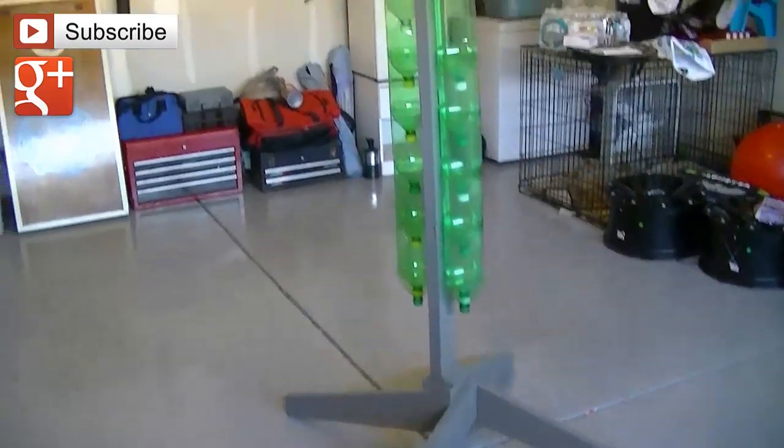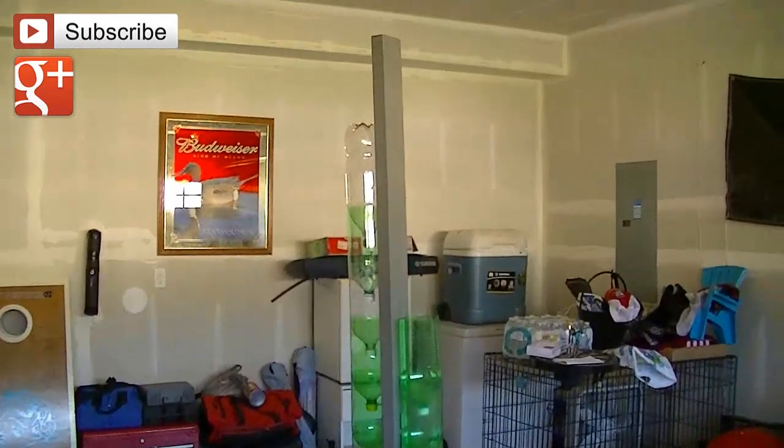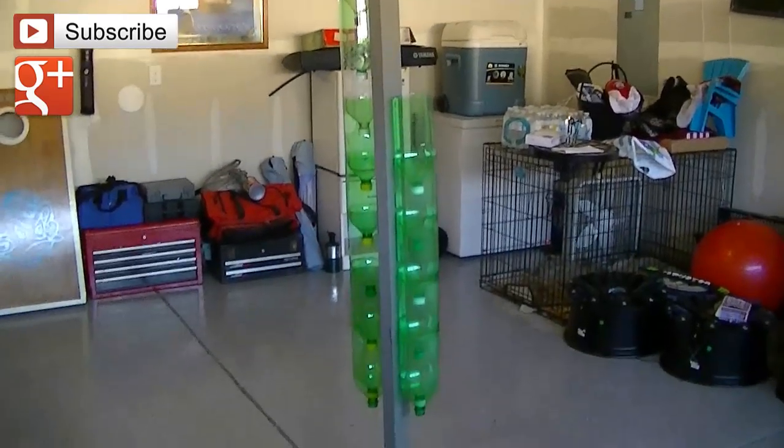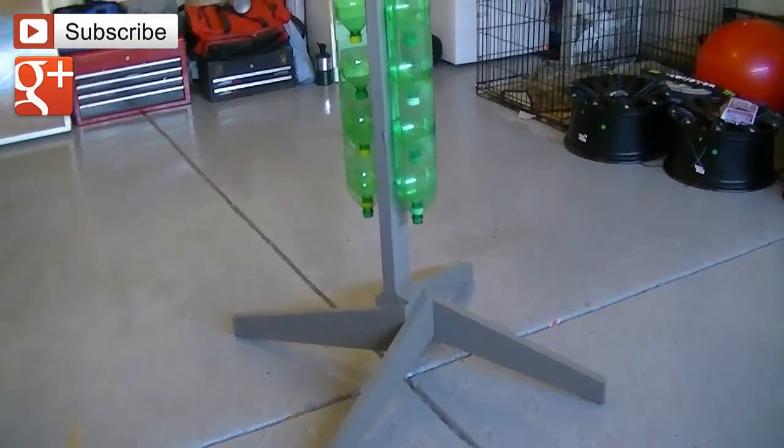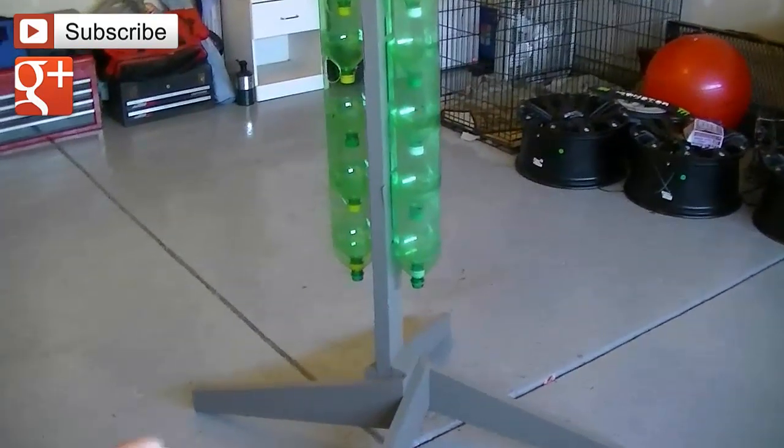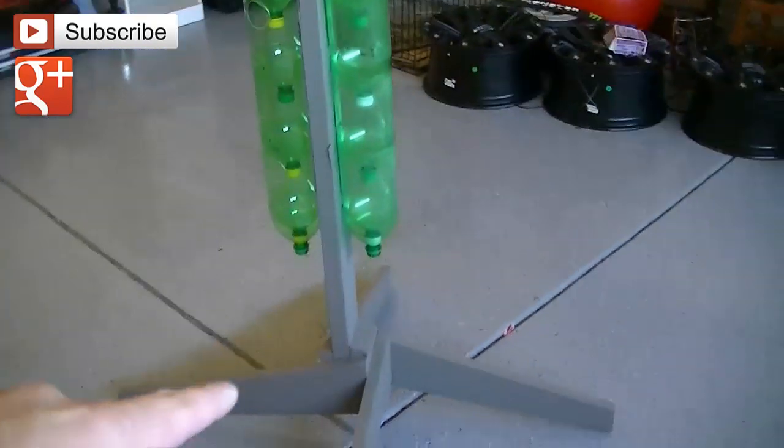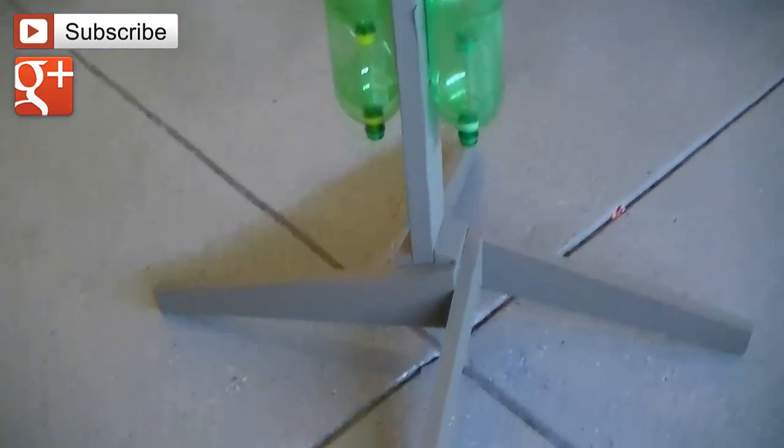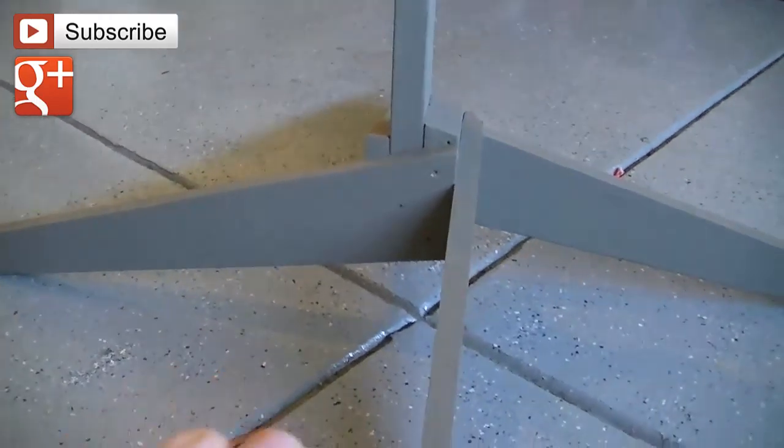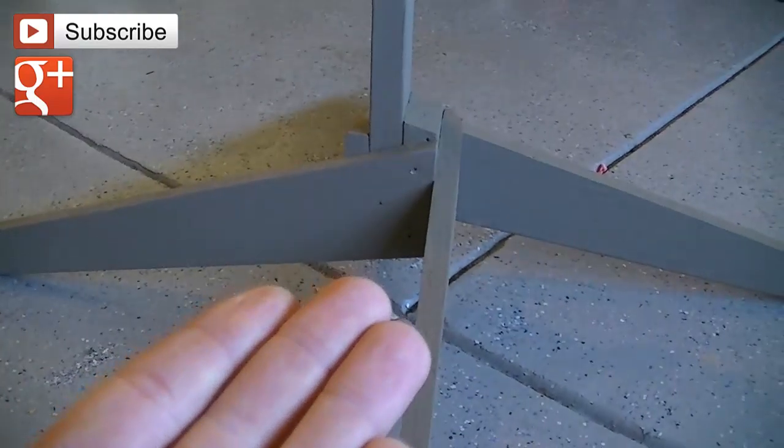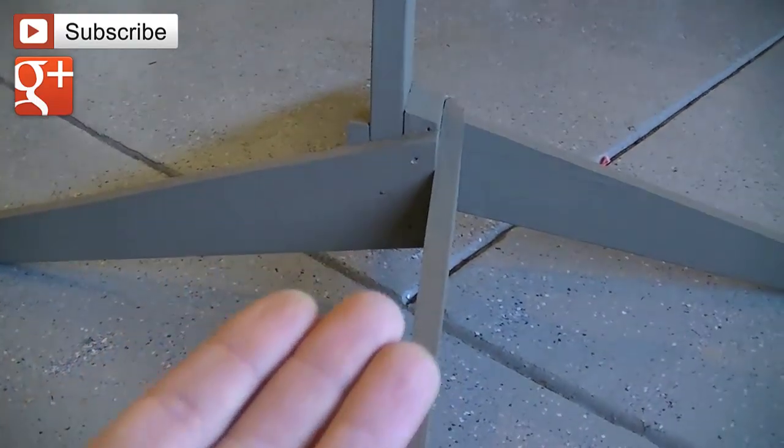So what I have is an aquaponics grow tower, or in this case I'm going to start off with it being a hydroponics grow tower, and it started out with just repurposed wood. This is deck board here at the bottom, and I have ripped it down to size and put an angle on each end to get it to lift up in the middle, and created legs out of that.